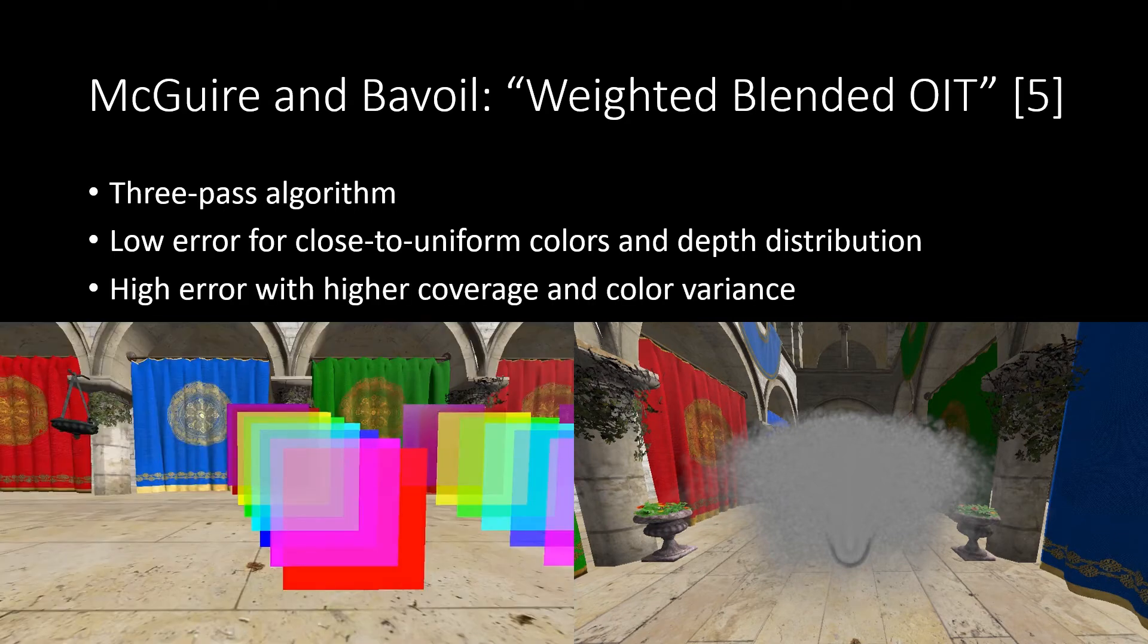But as we increase the color variance and particularly the coverage, we get artifacts. Here we have a stack of fully opaque squares and we really shouldn't be able to see anything behind this first red square in the front.